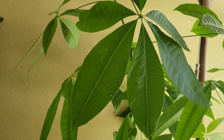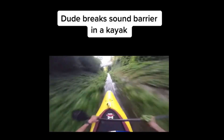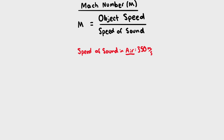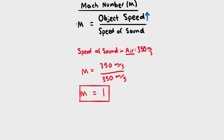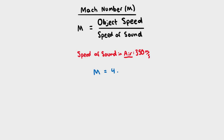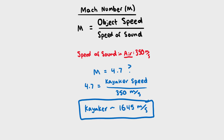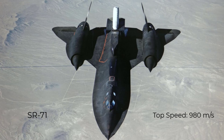In this video, it claims the kayaker broke the sound barrier and went Mach 4.7. Let's analyze that claim. The Mach number is a way of comparing how fast you're traveling to how fast sound travels in that medium. For example, if you match the speed of sound in air, which is 350 meters per second, you'd be traveling at Mach 1. Anything higher than Mach 1, you've passed the sound barrier and you're traveling at supersonic speed. Anything less than Mach 1 is subsonic speed. The Mach 4.7 claim means the kayaker would have to travel 4.7 times faster than the speed of sound in air, which would mean traveling at around 1,600 meters per second — that's ridiculous because our fastest jet aircrafts can't even go that fast.